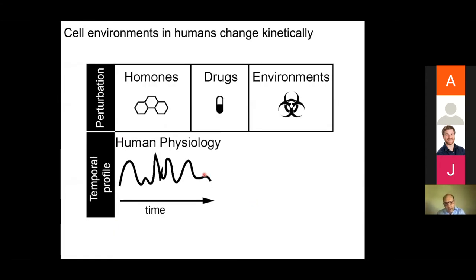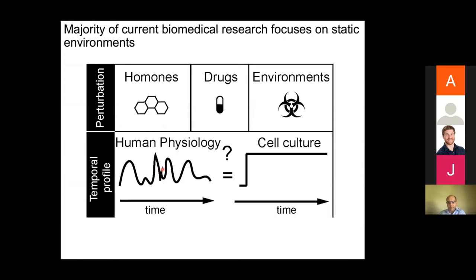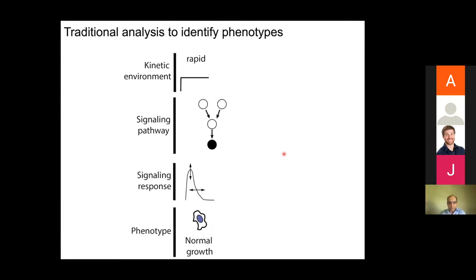So the question we ask in my lab is: if environments change over time in a non-constant manner, do we actually observe different biology compared to if the cells were exposed to the same stimuli under constant environments? We can have a situation in which we stress a cell using a rapid or instant acute stress — which is the paradigm of how we probe cells — this activates the pathway, which then can induce a stress response in an adaptive manner.